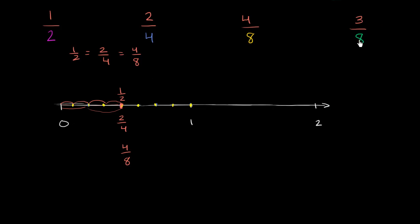Now what about 3 eighths? Well, we've already split our number line into eight equal sections. Let's go three of them, 1, 2, 3. So 3 eighths is right over here. 3 eighths is less than 1 half. It's less than 2 fourths. It's less than 4 eighths. It is a smaller number.